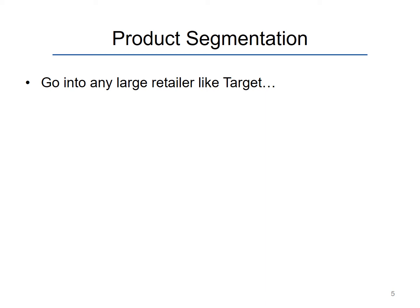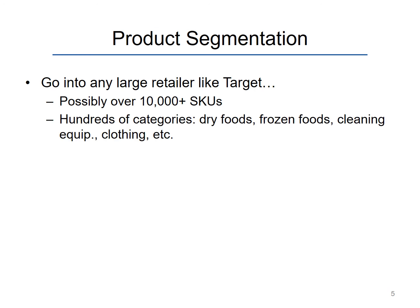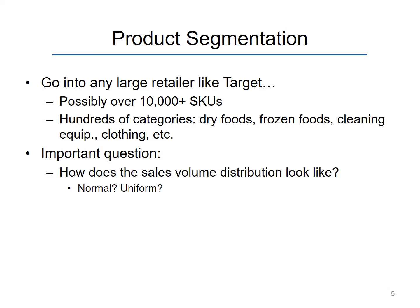So now let's imagine that we walk into a large retail store like a Target in the US. There are going to be thousands of SKUs, or stock keeping units, in the store. The range of categories will also be vast — they sell pretty much everything: dry foods, frozen foods, clothing, cleaning supplies, furniture, electronics, etc. If we were to look at the sales volume or sales value of the products in any given category, what would the distribution look like? Would it be normal or uniform? We'll be covering that in our next video. Thank you.